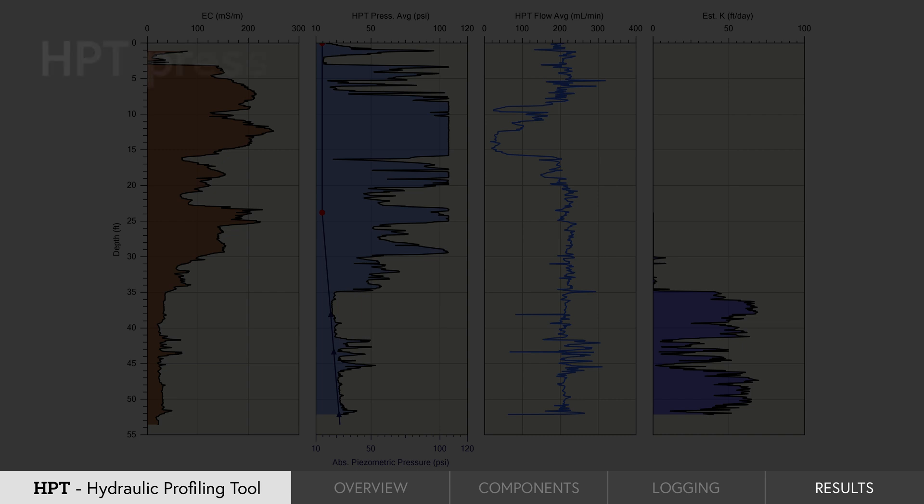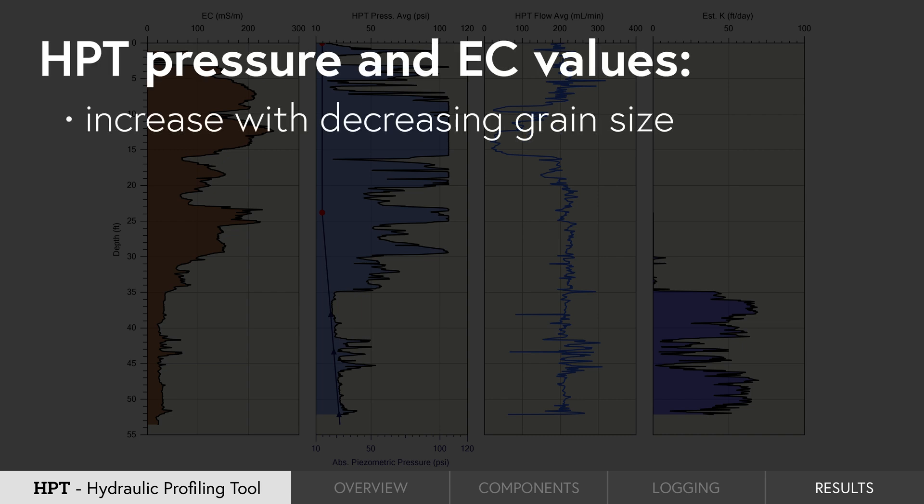In general, both HPT pressure and EC values increase with decreasing grain size and decrease with increasing grain size.